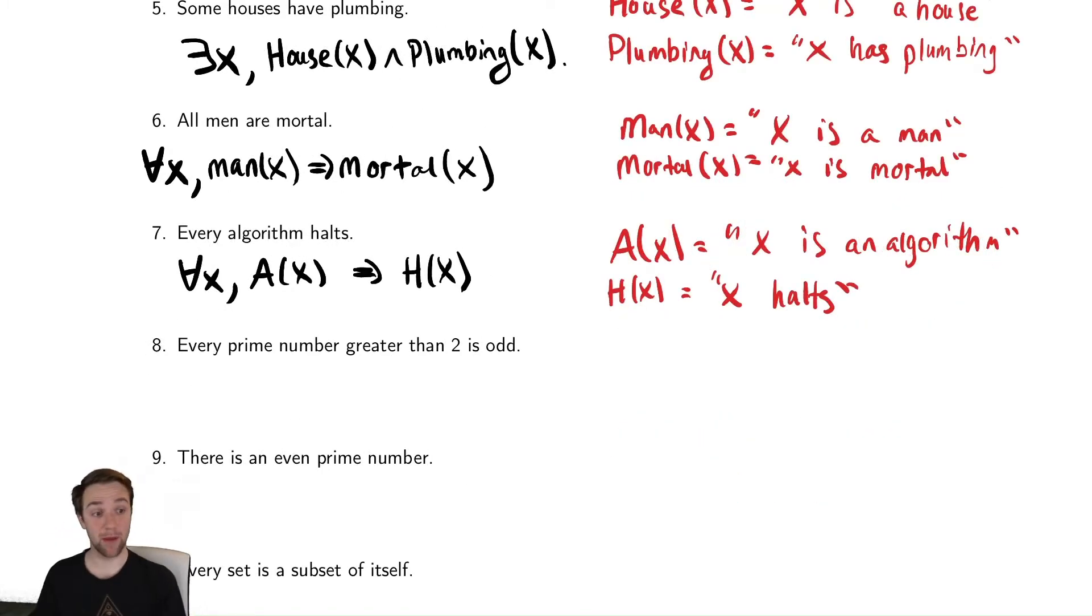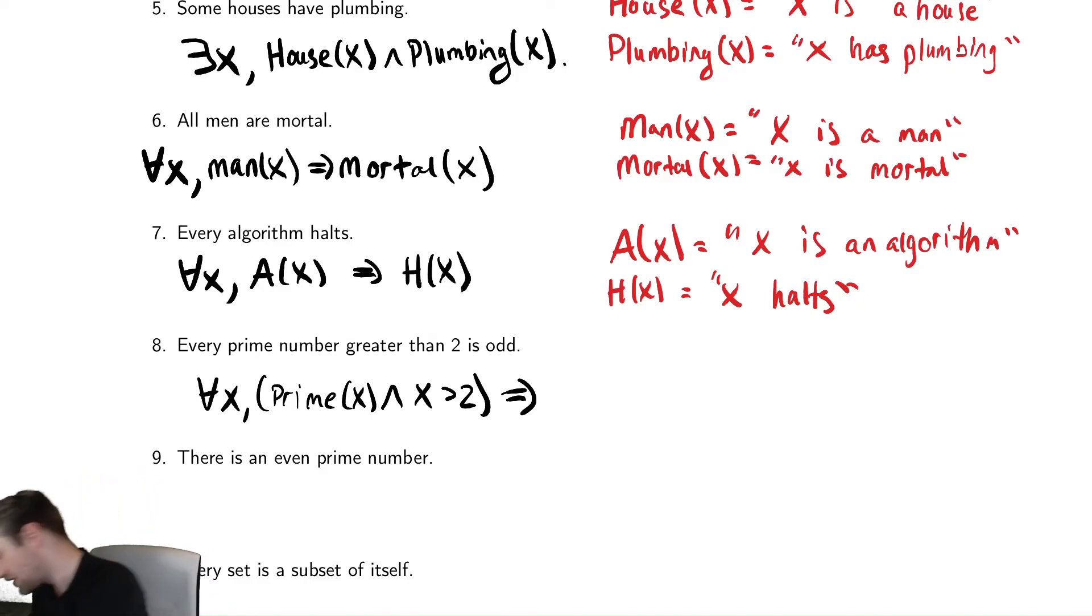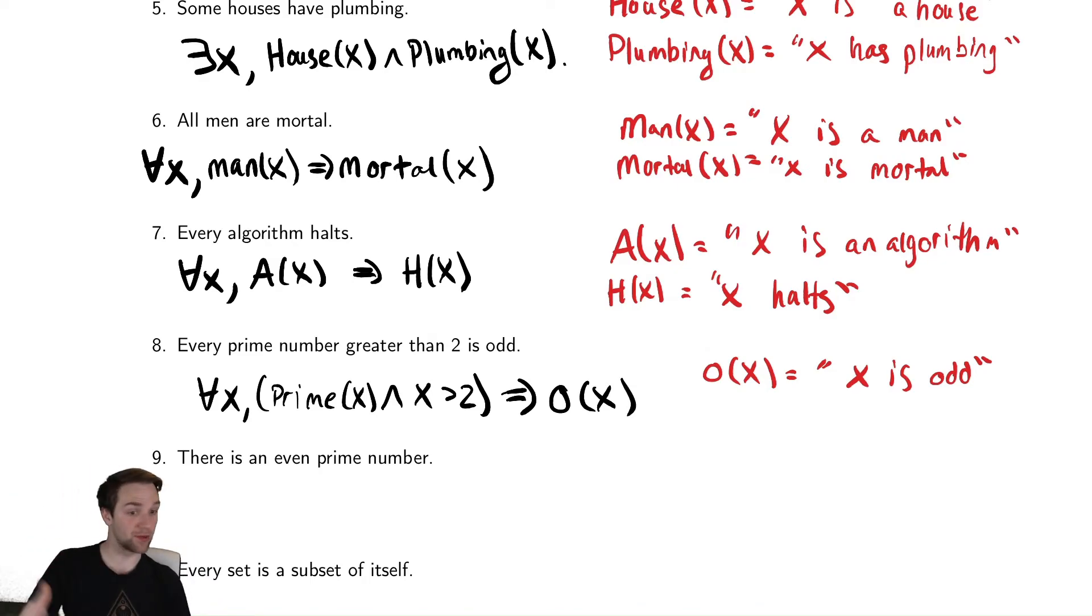The next one states that every prime number greater than 2 is odd. So we're trying to say for every x, if it is a prime number and it is greater than 2, then it is odd. And odd, we don't have a notation for that, so let's define it. We'll do O of x is x is odd. So we have, this implies that it is odd. And like I said earlier with prime, you could probably write down mathematics to define that. In fact, we'll do that later in this unit. But for now, we're just going to write O of x and move on with our lives.